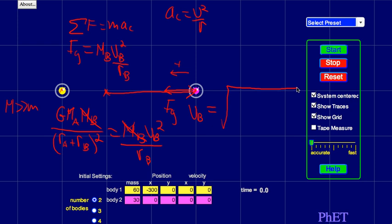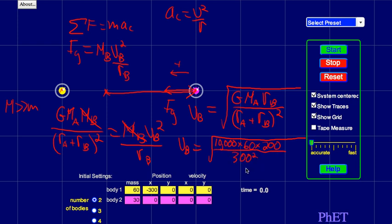And solving for the velocity of B, I get the square root of G M A R B over R A plus R B squared. And so on this problem, that is the square root. Remember G is 10,000 in the program. And the mass of A is 60. And RB, we figured out, was 200. And then RA plus RB is the whole separation. So you can just put in 300 squared. And that comes out to, I'm going to round to the nearest one because the program doesn't take digits, 37. And whatever units the program's using. And so that would be the velocity of star B.